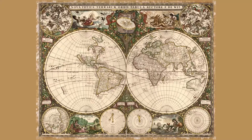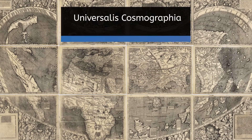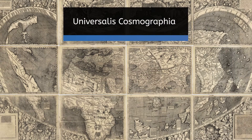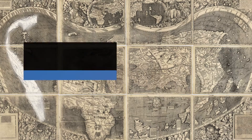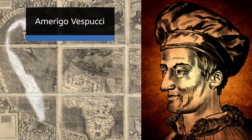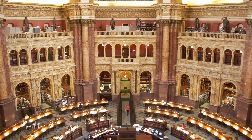Maps are geographic tools serving a very practical purpose. But let's not forget that they can also be beautiful and historically significant. This map, called the Universalis Cosmographia, was created by a German mapmaker in 1507. It's known as America's birth certificate because it was the first map to recognize the continent of America, which the mapmaker named after the explorer Amerigo Vespucci. Because of its historical significance, this map, which resides in the Library of Congress, is widely considered one of the most valuable maps in the world.